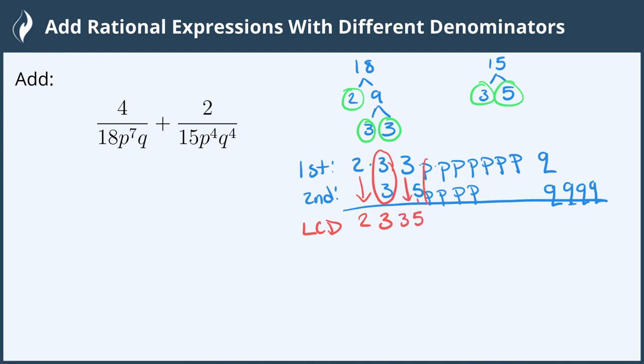I also need a 5 and I need 1, 2, 3, 4, 5, 6, 7 p's so p to the 7th and I need 1, 2, 3, 4 q's so q to the 4th. Now I can multiply 2 times 3 times 3 times 5 which gives